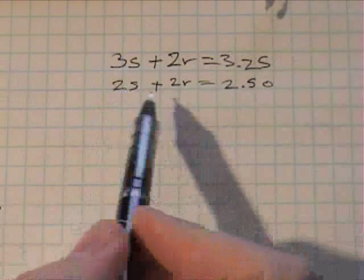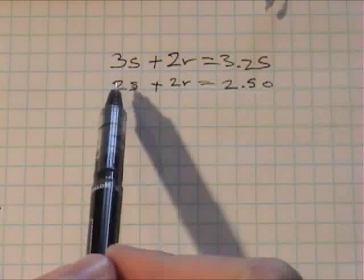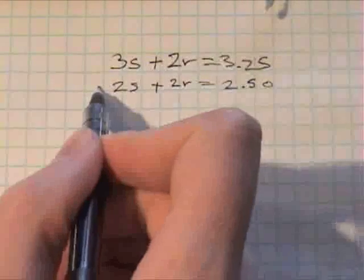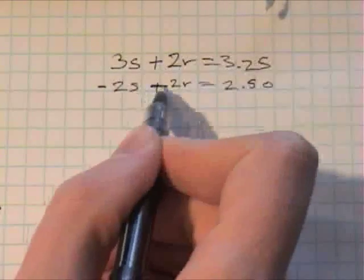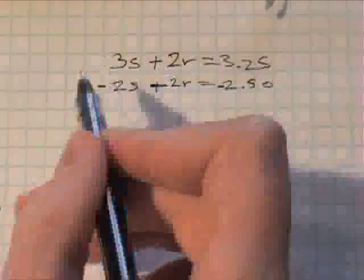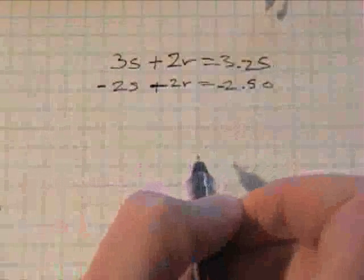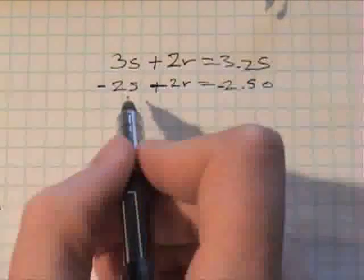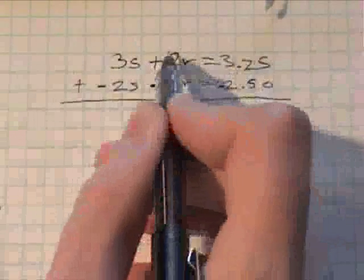The way we do that is we need to set up opposites in terms of one of these variables. So if we multiply everything here by negative one, everything becomes negative. We haven't changed any value here, we're allowed to do that. We're just multiplying each term by the same number. And then we add them all together, we see that these cancel out.